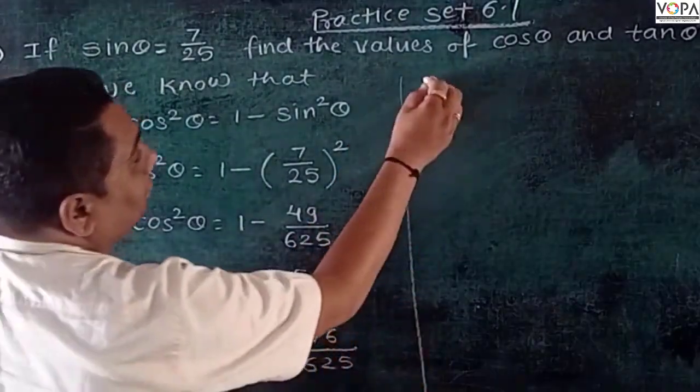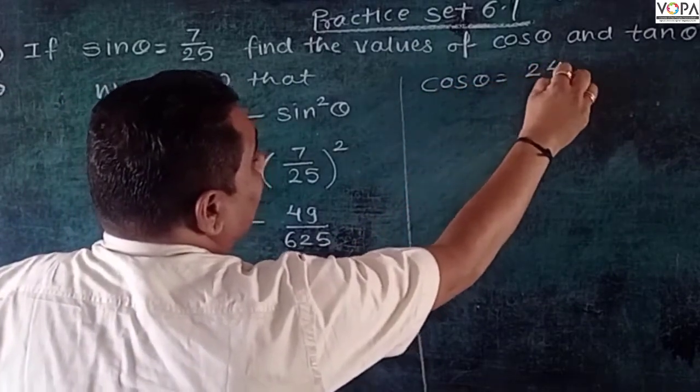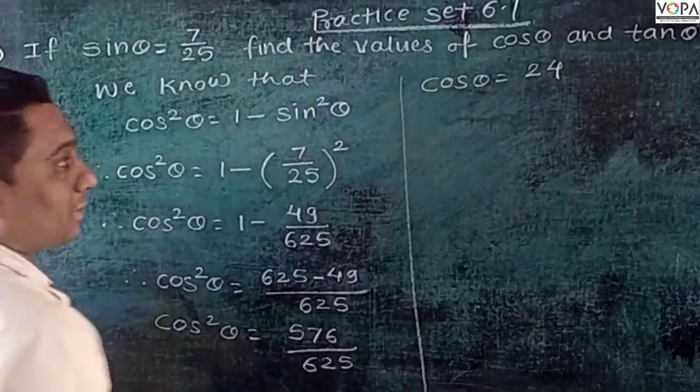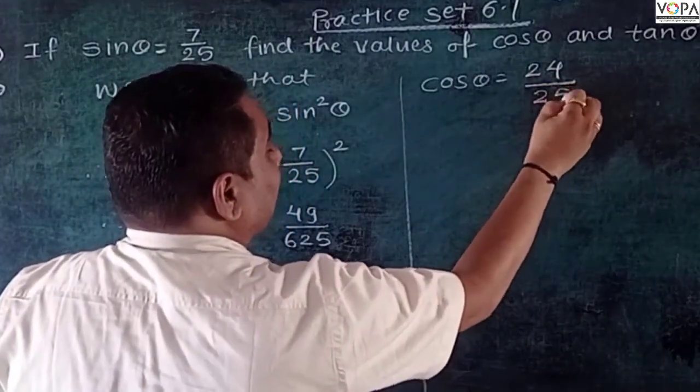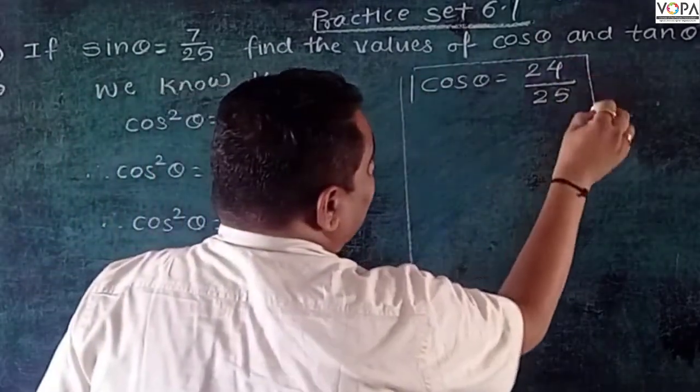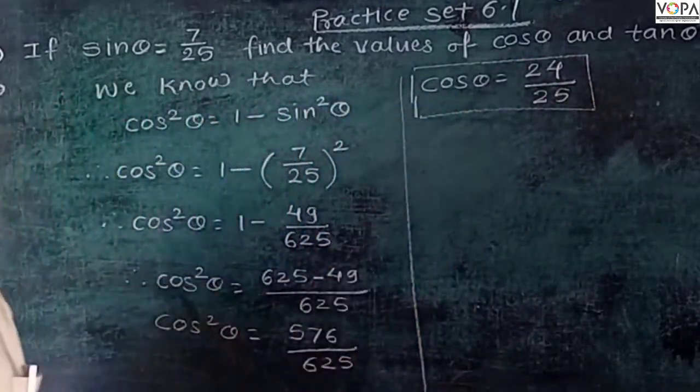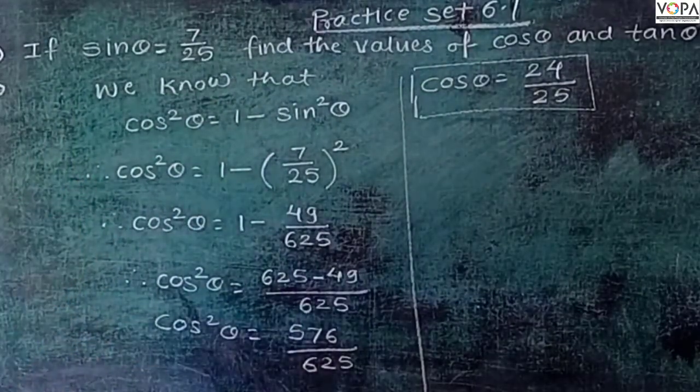We have cos θ = √(576/625) = 24/25. So in this manner we can calculate the value of cos θ, that is 24/25. Now we can find out the value of tan θ.